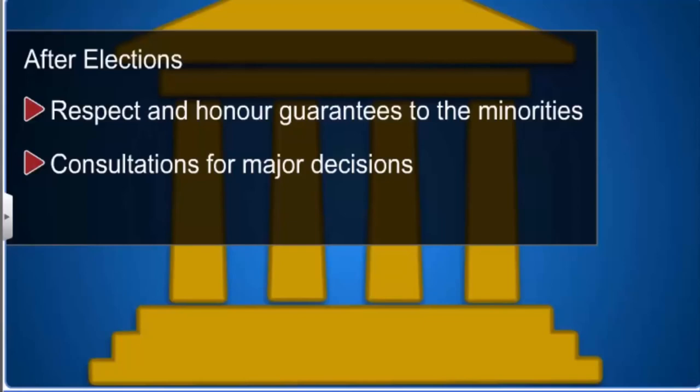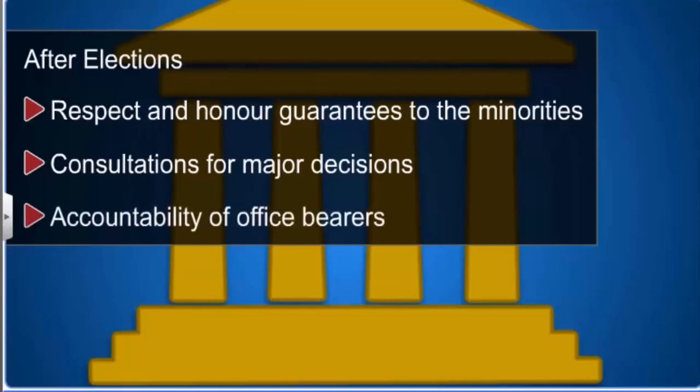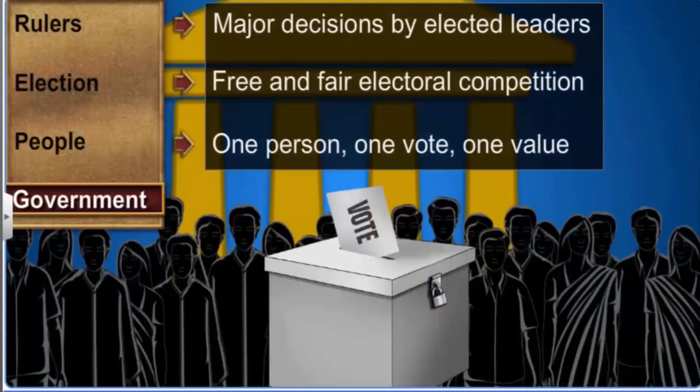All office bearers are assigned certain rights and responsibilities by the constitution as well as the law. They are accountable for fulfilling their responsibilities to the public as well as to other independent officials. Thus, a democratic government rules within the limits set by constitutional law and citizens' rights. That is the fourth and final feature of a democracy.